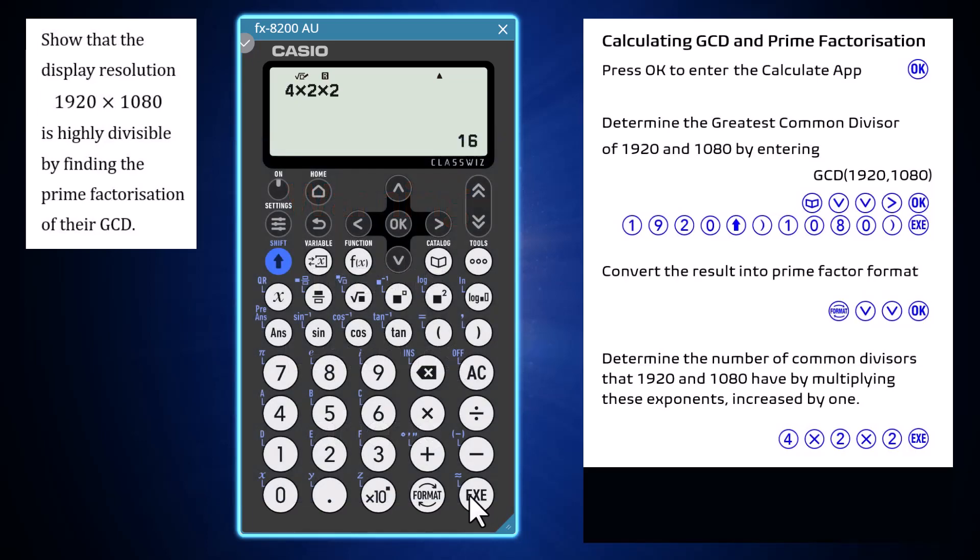This number theory result works to find the number of factors of 120 because each factor of 120 can be constructed by multiplying 3, 2, 1, or 0 twos, by 1 or 0 threes, and 1 or 0 fives.